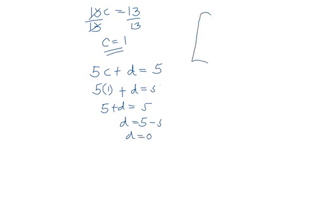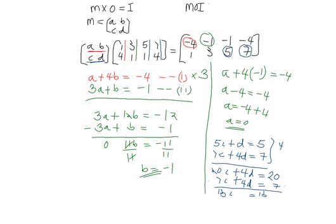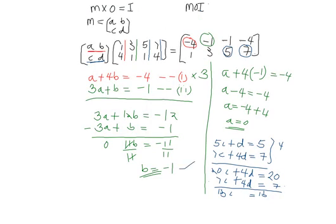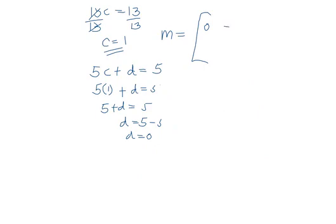So now we have all the values of the matrix A, B, C, D. Substituting the values: A = 0, B = -1, C = 1, D = 0. So the matrix of transformation is [0, -1; 1, 0]. This is the matrix of transformation, and this is the end of this lesson. Thank you for listening.